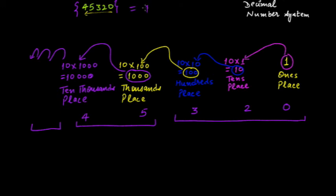This grouping is why numbers are sometimes written with commas — for example, 45,320. The comma is there because of this grouping: ones, tens, and hundreds are grouped together, then thousands and ten thousands are grouped together. If there were digits at the lakhs and ten lakhs places, those would be grouped together as well.